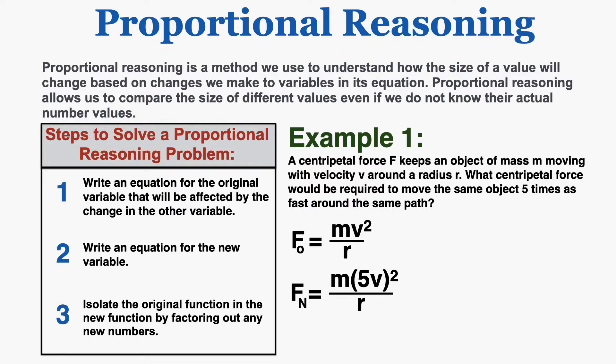Step three says to isolate the original function in the new function by factoring out any new numbers. My original function is mv squared over r, so I'm going to try to factor out any other numbers and just get a number times mv squared over r. When I carry up the square, I have to square both numbers in the parentheses, so that 5 becomes 25. Bringing 25 to the left of the fraction, I can now see that I have 25 times that original equation.